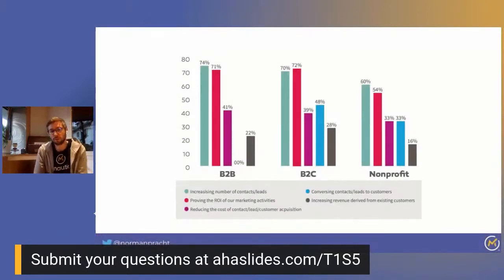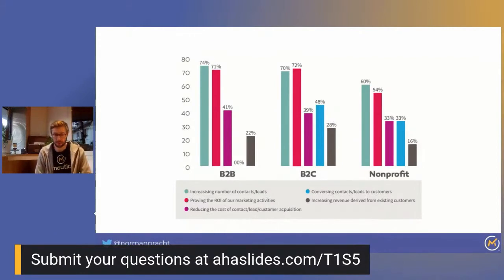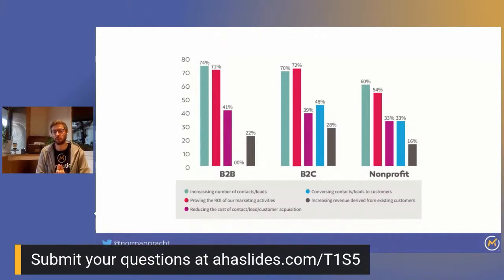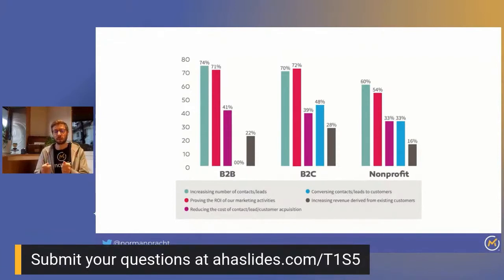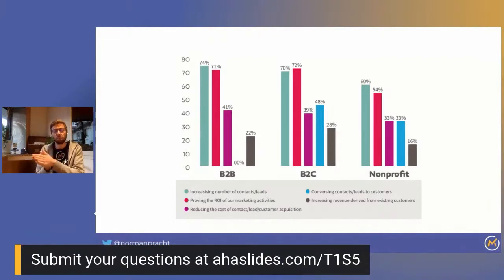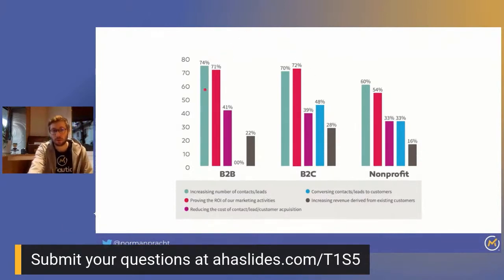Another reason why marketing automation is super interesting for agencies: what do companies most want to achieve on the marketing side? The first thing they want is to increase the number of leads they can generate. Some of you are probably already working on what you call lead generation, but most of the time it's really traffic generation. You have to insist on how to convert visitors into leads — without giving companies the feeling that those leads are unqualified and therefore uninteresting — and nurture them before giving them to the sales team. Marketing automation helps convert traffic into leads, and that is what companies want, whether in B2B, B2C, or non-profit.